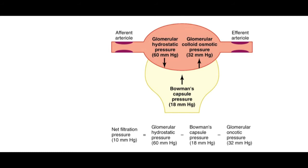Hydrostatic pressure promotes fluid moving away from whatever compartment you're talking about; oncotic pressure drives fluid toward it. The glomerular hydrostatic pressure is roughly 60 mmHg. The oncotic is about 32, which opposes filtration, and the Bowman's capsule hydrostatic pressure is about 18. Adding those opposing forces together, you get roughly 10 mmHg net. Anywhere between 10 and 15 is the average net filtration pressure.